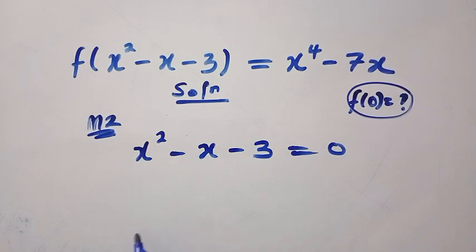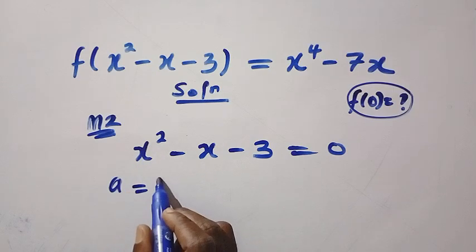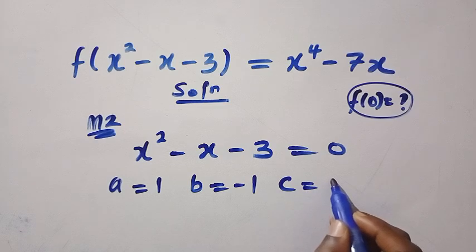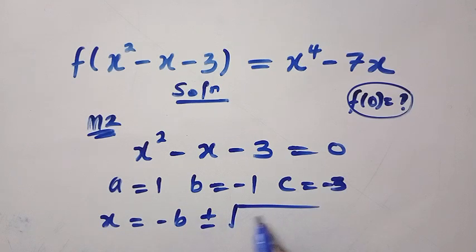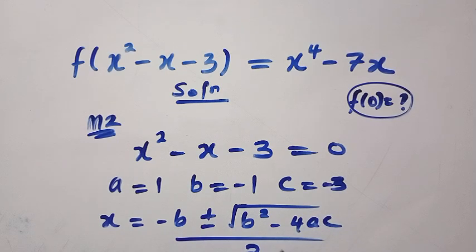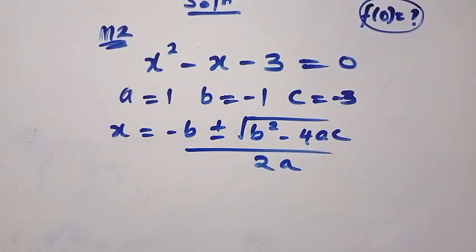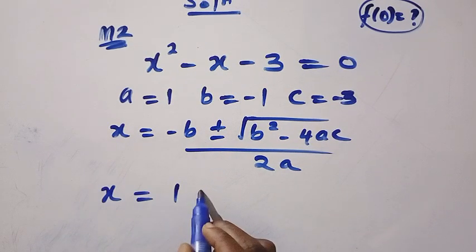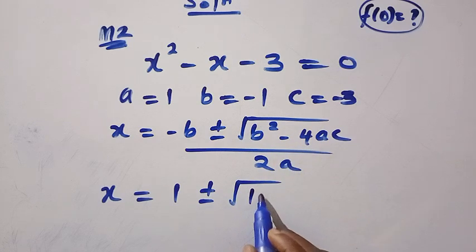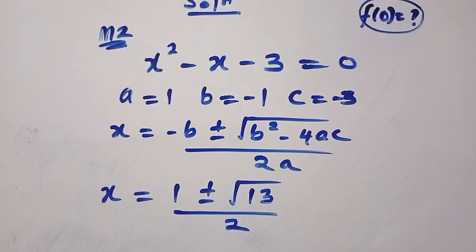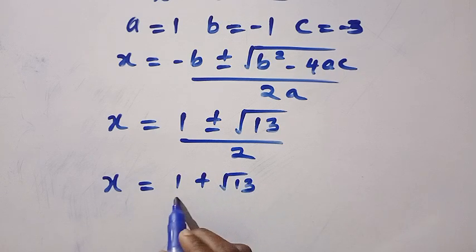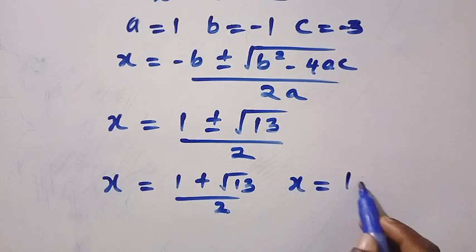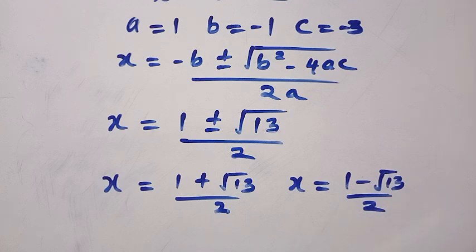I want to find the value of x by applying the quadratic formula. The coefficient of x squared is 1, b is minus 1, and c is minus 3. Applying the quadratic formula, x equals minus b plus or minus the square root of b squared minus 4ac, divided by 2a. Substituting, we have x equals 1 plus or minus the square root of 13, divided by 2. So we have two values: x equals 1 plus root 13 over 2, and x equals 1 minus root 13 over 2.